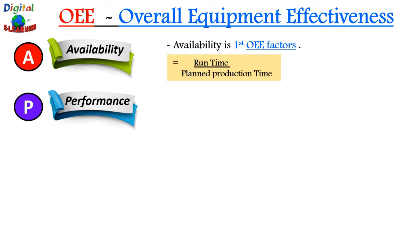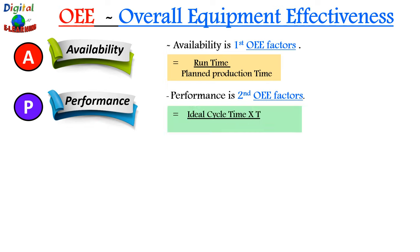Next is performance — the second OEE factor. It takes into account how fast we can process one piece of product, which we call cycle time. We calculate performance with the formula: ideal cycle time multiplied by total count, divided by run time.